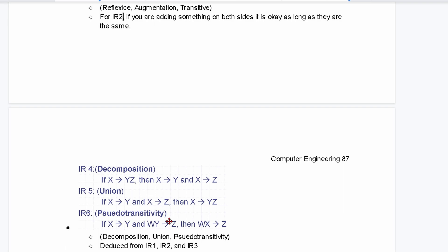We also have a union here. So, if X goes to Y, and X goes to Z, well, we can join them and say X is going to Y and Z.